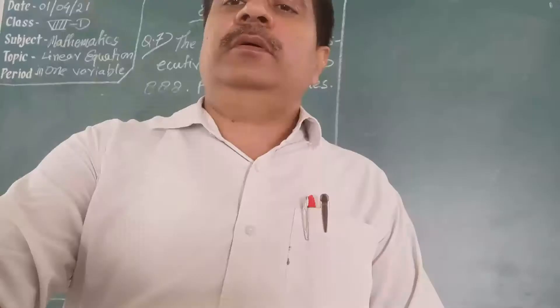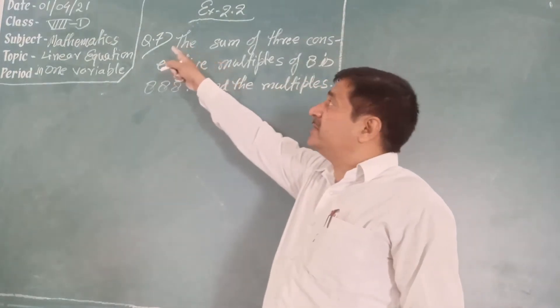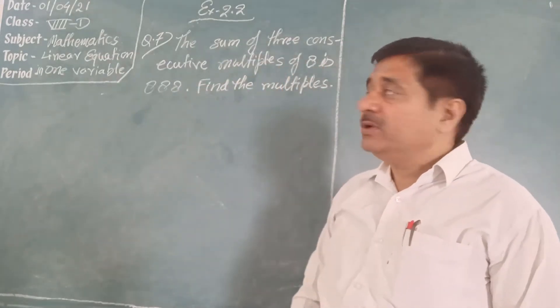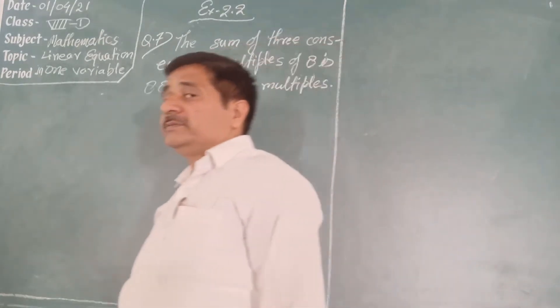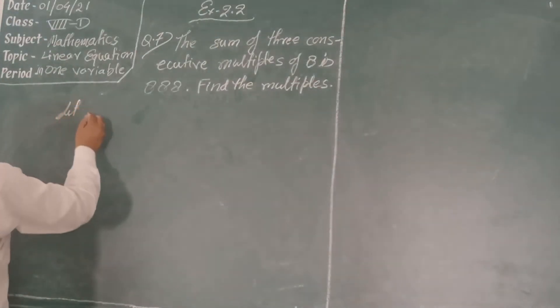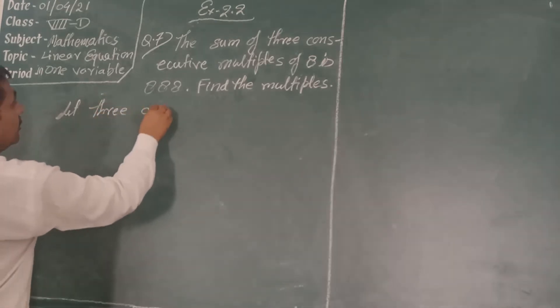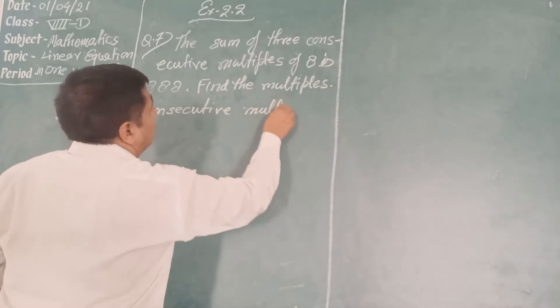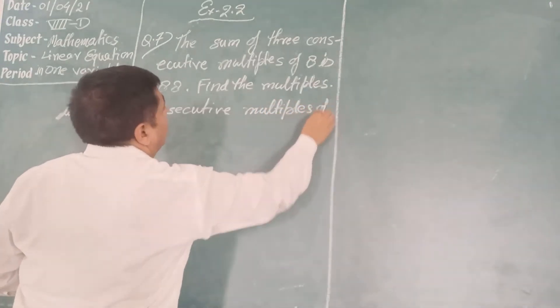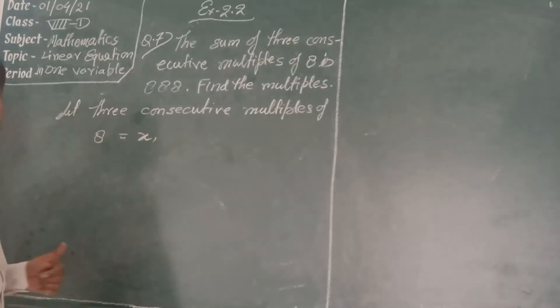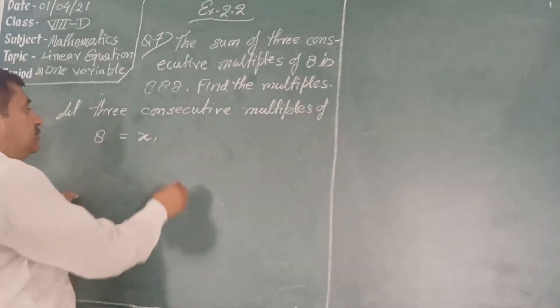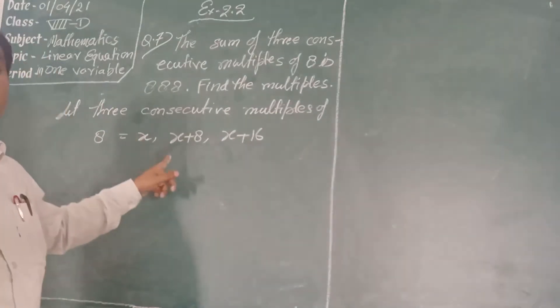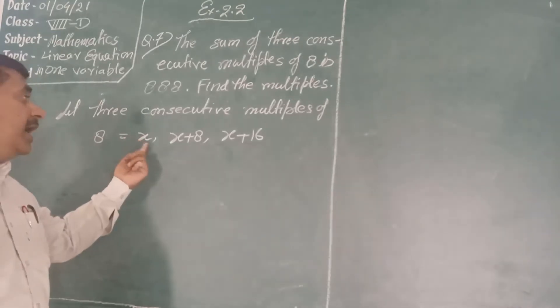Now question 7, students. The sum of 3 consecutive multiples of 8 is 888. Find the multiples. Let 3 consecutive multiples of 8 be x, then x plus 8, then x plus 16.